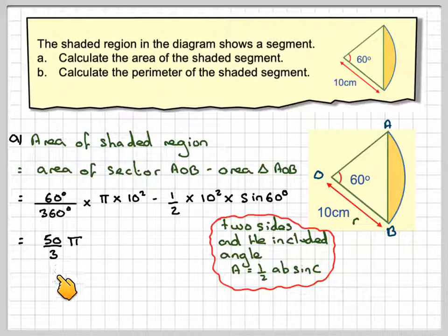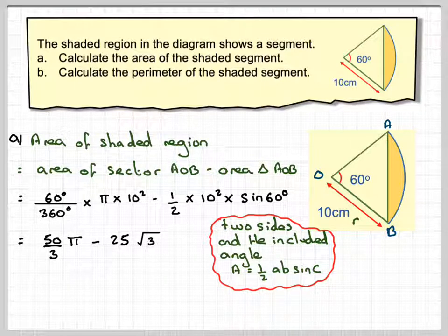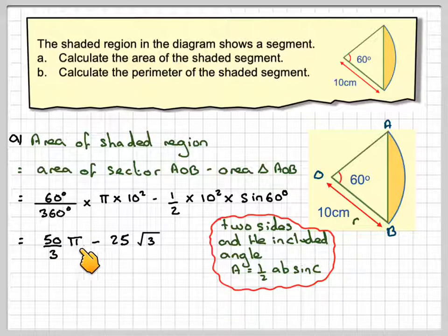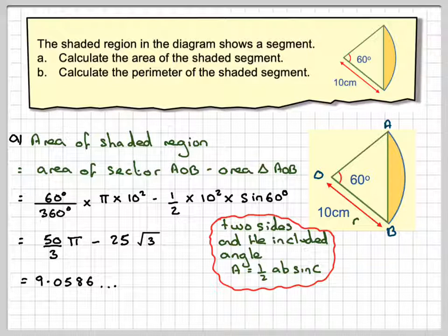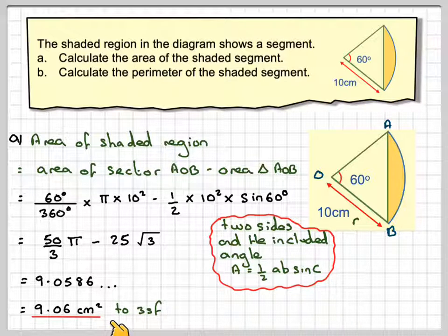You're going to get 50 over 3 pi. Now leave it like that, minus 25 root 3. So this bit here gives you 50 over 3 pi, this bit here will give you 25 root 3. Now leave it like that and then put that into your calculator, press the SD button and you're going to get 9.0586, which is 9.06 centimetres squared to three significant figures. So the emphasis is use the fraction button and keep pi in your answer right until the end.